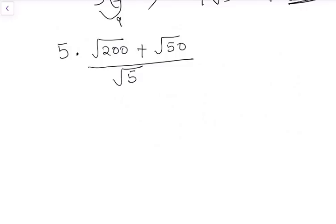We are saying square root of 200 plus square root of 50 dividing square root of 5. How do we solve it? The same simple approach. We want to break it down.